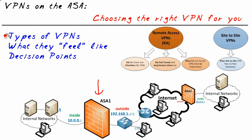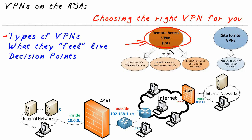We want to make sure that we know our options so we can pick the right solution to meet a business need. We'll take a look at what the VPN types feel like to the end user, and also the decision points based on criteria to help us decide which VPN option is perfect for our situation. The two major classifications are remote access VPNs and site-to-site VPNs.